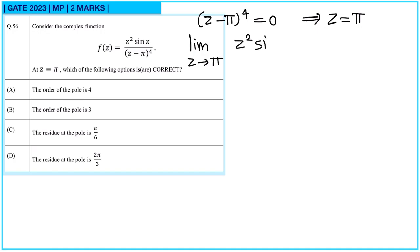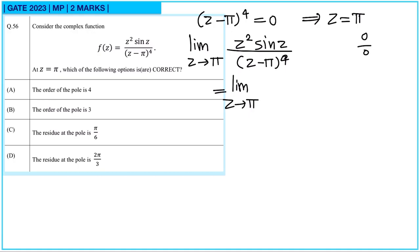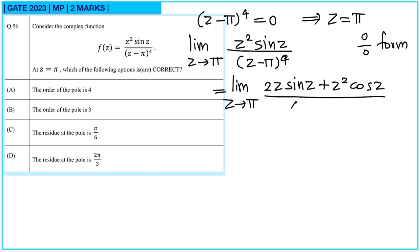We evaluate the limit as z → π of z²·sin(z) / (z−π)⁴. Substituting z = π gives sin(π) = 0 in the numerator and 0 in the denominator, so it is of 0/0 form. We apply L'Hôpital's rule, differentiating numerator and denominator to get (2z·sin(z) + z²·cos(z)) / (4·(z−π)³).